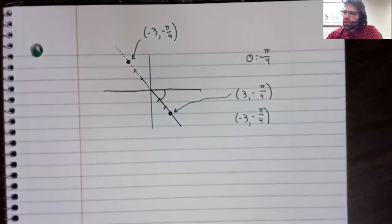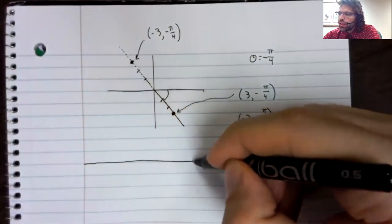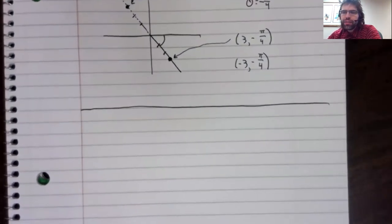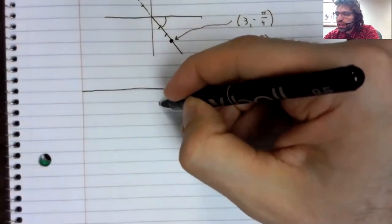An implication of this is that there's more than one way to represent a point using polar coordinates.